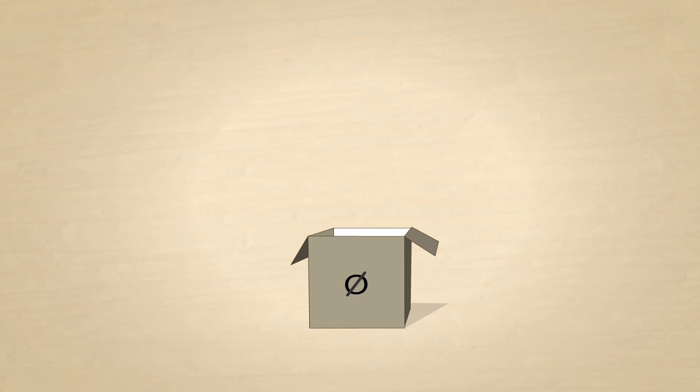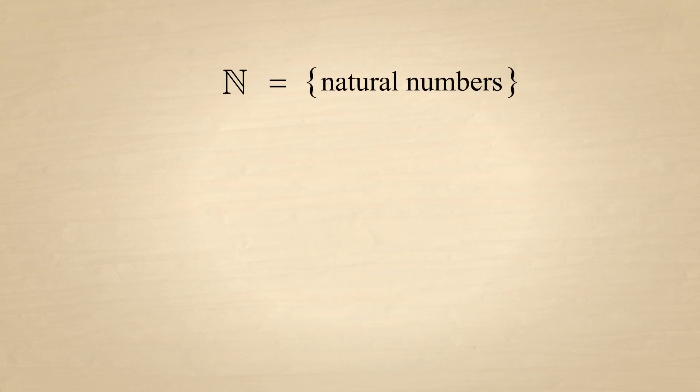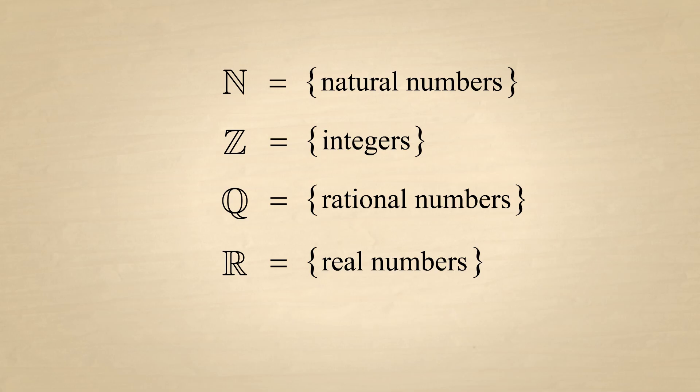Other important sets are sets of the various number types which we explored in pre-algebra. The set of natural numbers is typically designated by the bold-faced letter N. Likewise, the set of integers is designated with the letter Z, the set of rational numbers is designated by Q, and the set of real numbers is designated by R. Another important set is the set of complex numbers C, which we will discuss in a lecture later in this series.